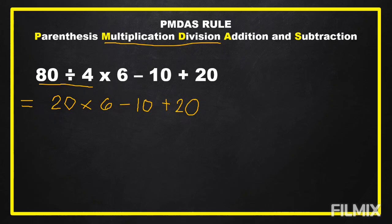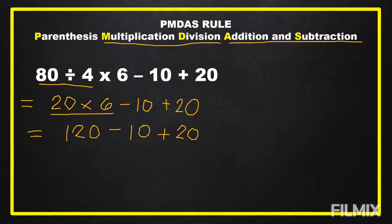After that, we multiply 20 times 6. 20 times 6 equals 120. Then copy minus 10 plus 20. We solve one at a time. We have subtraction and addition remaining. Addition and subtraction can also be interchanged — it depends which operation comes first from left to right. Here, subtraction comes first, so we subtract before we add. 120 minus 10 equals 110, then plus 20. 110 plus 20 equals 130. This is our final answer.